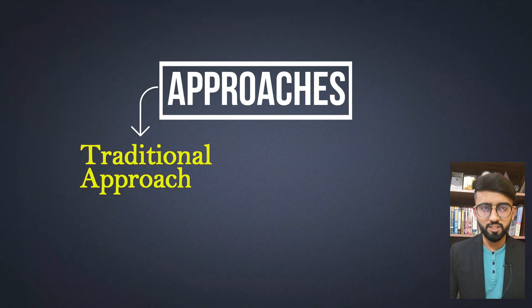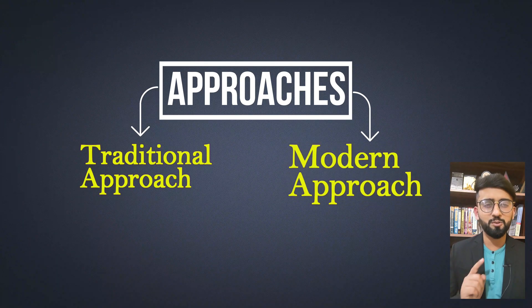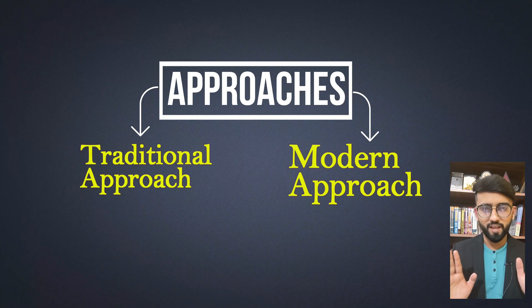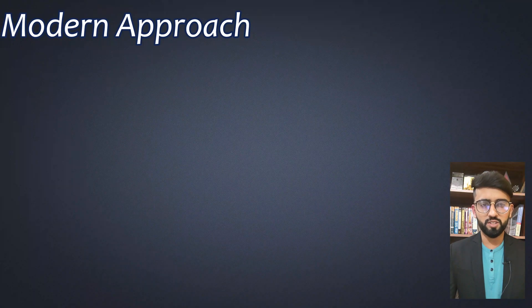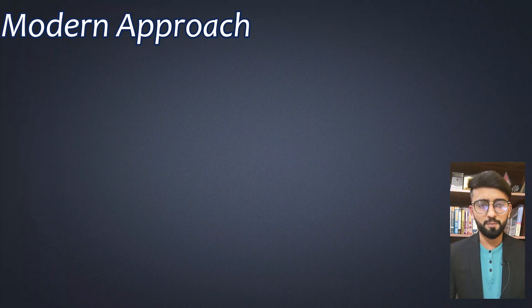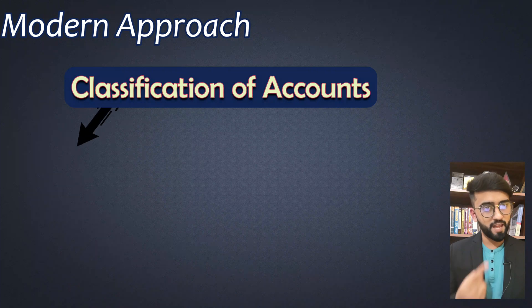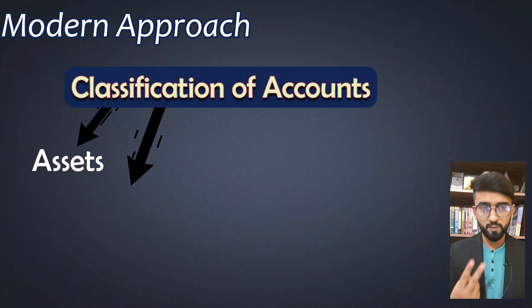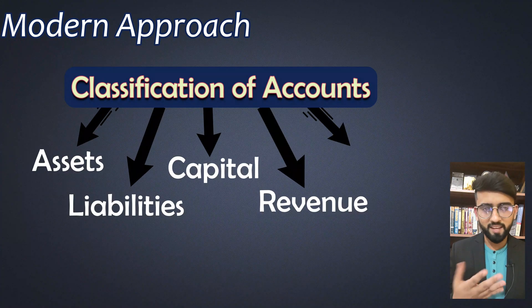The first one is the traditional approach and the second one is the modern approach. So today we are going to explain the rules of debits and credits. According to the modern approach, all accounts have been classified into five categories: Assets, Liabilities, Capital, Revenue, and Expenses.